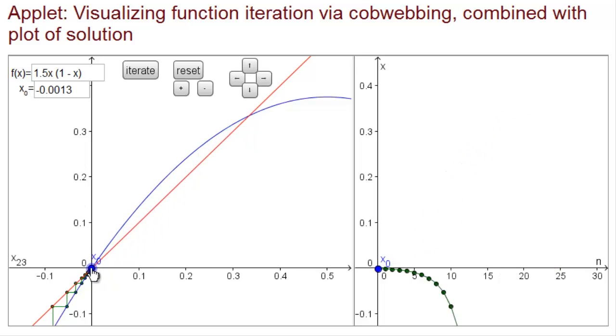This means that the equilibrium zero is unstable. This dynamical system has two equilibria. The equilibrium at zero is unstable and the equilibrium at one third is stable.